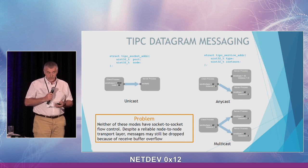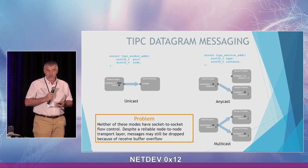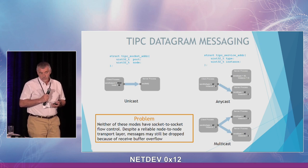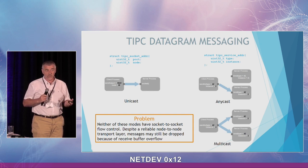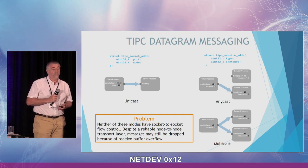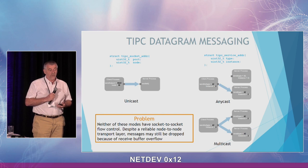There is a problem with datagram messaging: you are not guaranteed delivery because there is no end-to-end flow control. Chances of delivery are better than with UDP because TIPSY has a link layer providing node-to-node delivery guarantees. However, even when a message arrives at the destination socket, it may still be discarded simply because the destination buffer is overfilled.